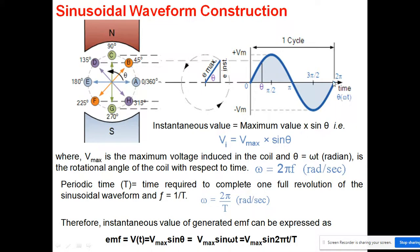You can see this is 360 degrees. So the electrical angle is defined as: a cycle of alternating quantity divided into 360 divisions is called the electrical angle.